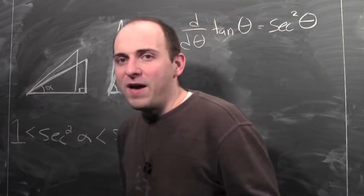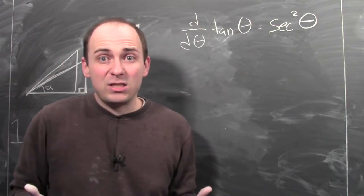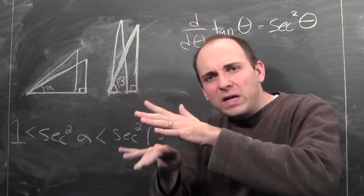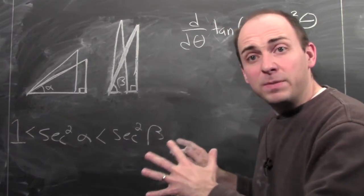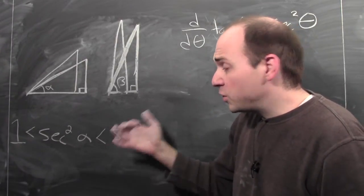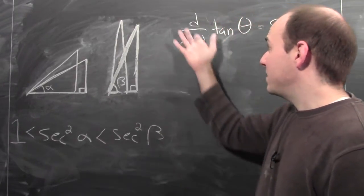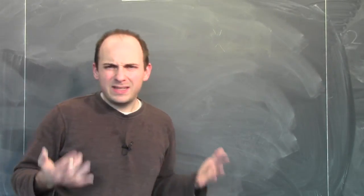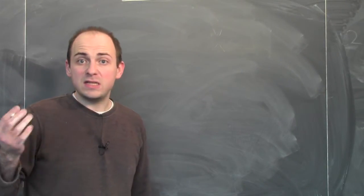These kinds of facts — that the derivative of tangent is secant squared theta — you can really get a sense for why they're true by thinking about triangles and how wiggling the angle affects certain ratios of the sides. But if this seems a little too abstract, we can do a numerical example to see this formula in action.